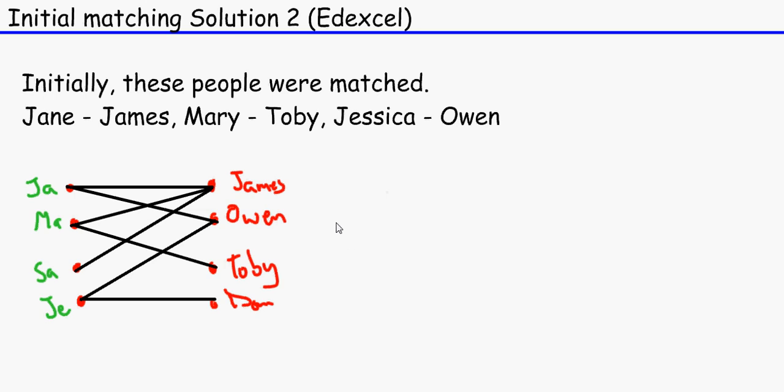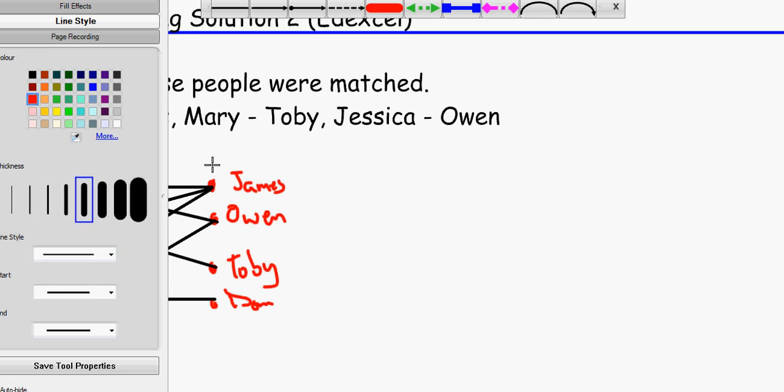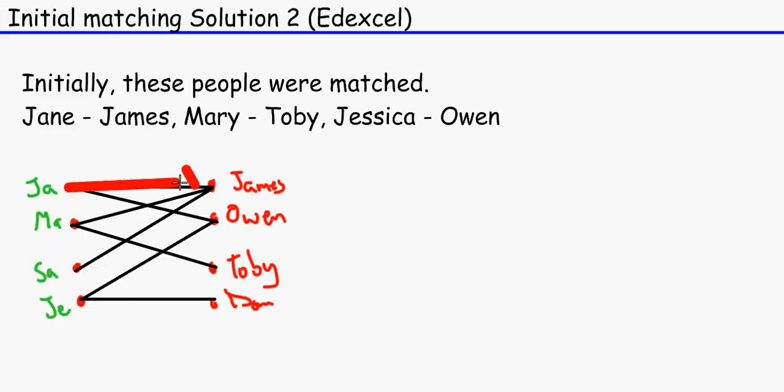And this is solution two. And what we'd do is basically make one bold and make one not bold. So what we'd do, we'd use a thick colored pen to tell us where the initial matching is. So Jane is with James. Mary is with Toby. Let's change it to red. And let's change the thickness. So Jane is with James, Mary is with Toby, Jessica is with Owen.